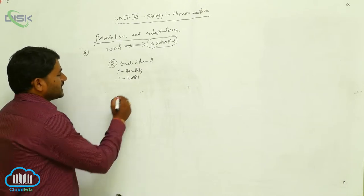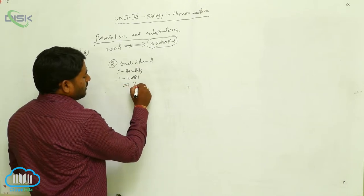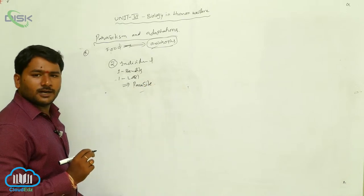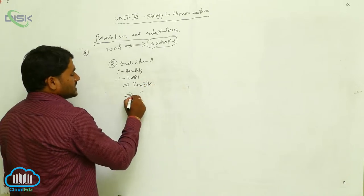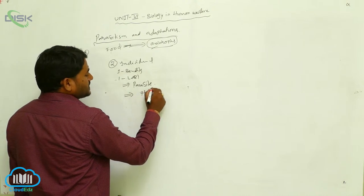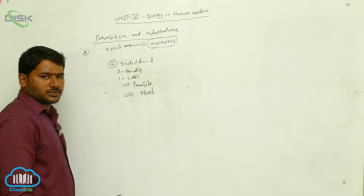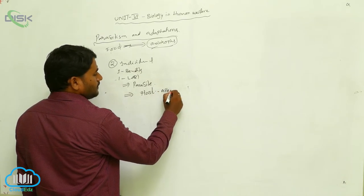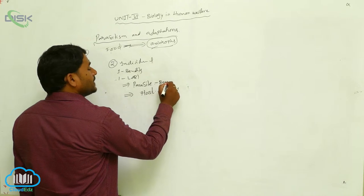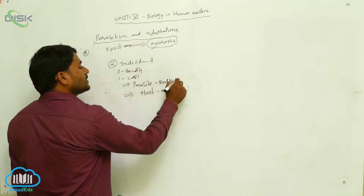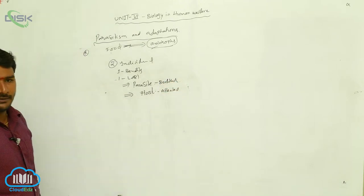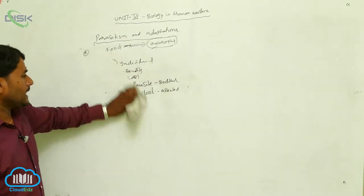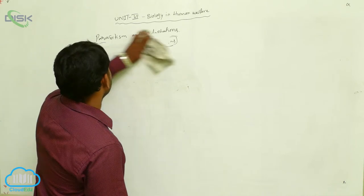The individual which is getting benefit is called as the parasite. The individual which is greatly affected with the disease is called as the host. So the host is the affected individual and the parasite is the benefited individual. This is the introduction of parasitism and parasite definition.